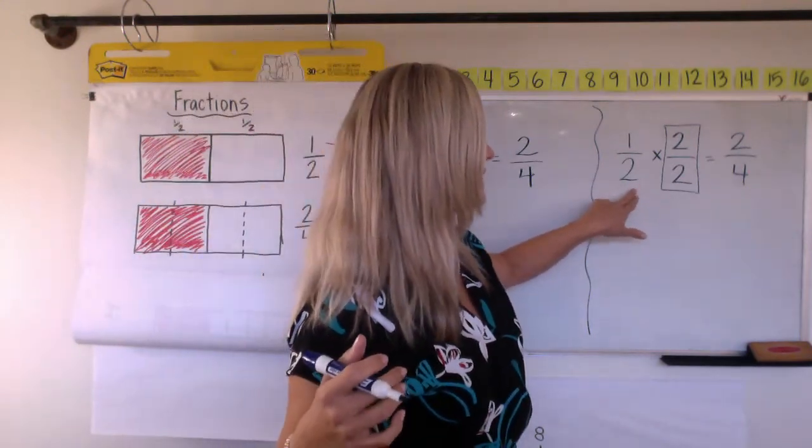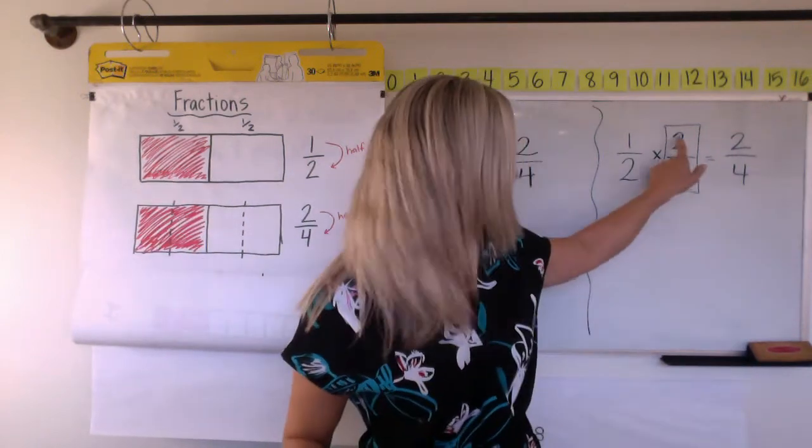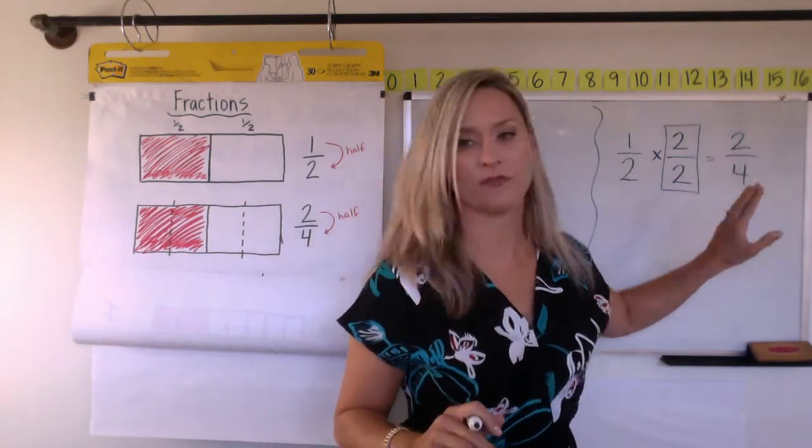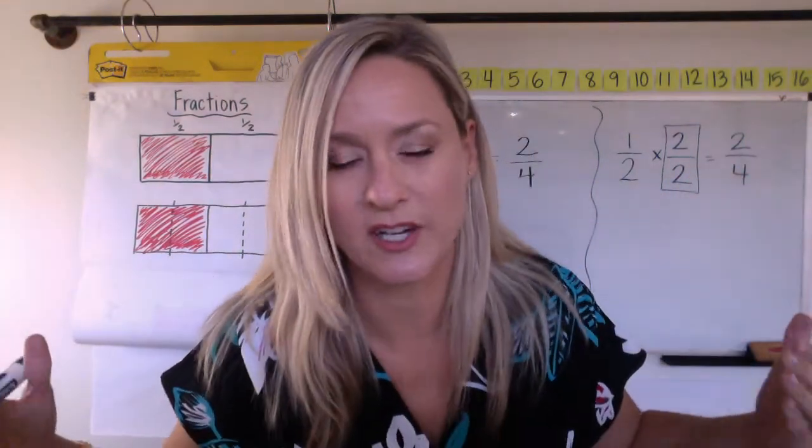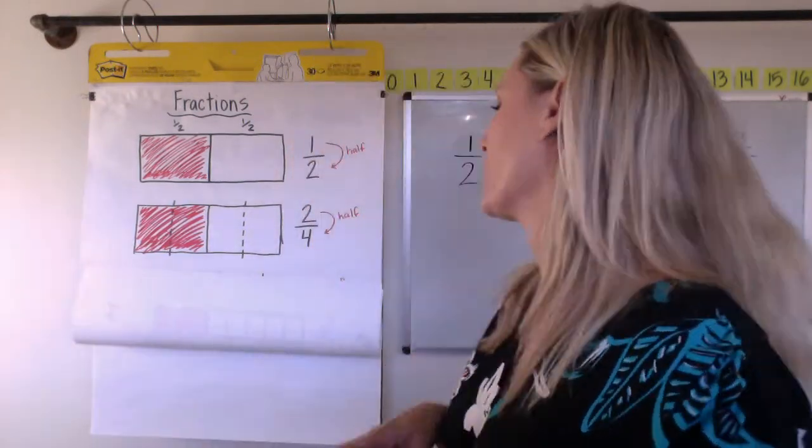But now we can see one half. You break that one in two and another one in two and it's now two fourths. They're equal to each other. We didn't change the amount. We just changed the cuts, right? Okay, let's try another one.